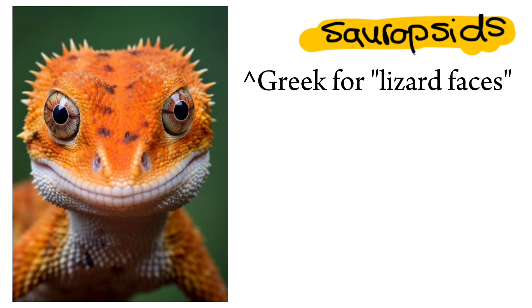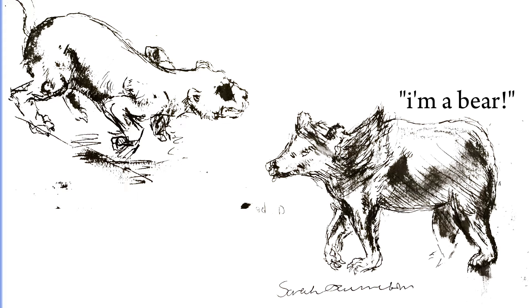You, watching this video, are a synapsid — I'm assuming you're a human being. The synapsids are a group of animal species that include all mammals, such as cats, dogs, and humans.